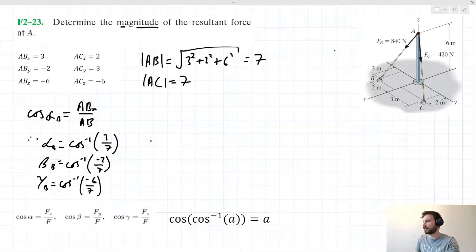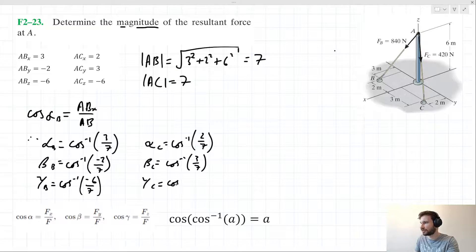We can express these for C as well. Alpha C is the inverse cosine of 2 over 7. Beta C is the inverse cosine of 3 over 7. And gamma C is the inverse cosine of -6 over 7.